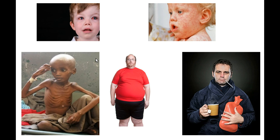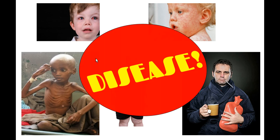Down here we have an image of a child who is suffering from malnutrition — we can see that his bones are very visible, he's got a very low body weight, his facial features look quite gaunt. In the middle we have a man who is obese — he has an excessive amount of body fat around his stomach and obviously weighs more than he should. And lastly, that man looks like he has man flu: he's got the red nose, the bloodshot eyes, a thermometer in his mouth and a hot water bottle. So from looking at these images it's really easy for us to see that these five people are suffering from some kind of disease.